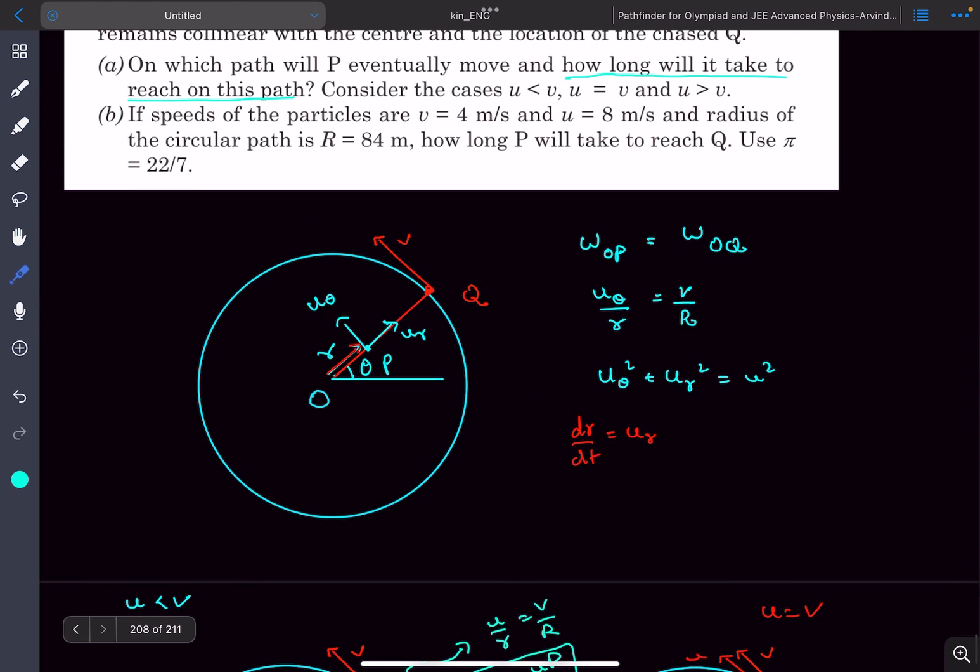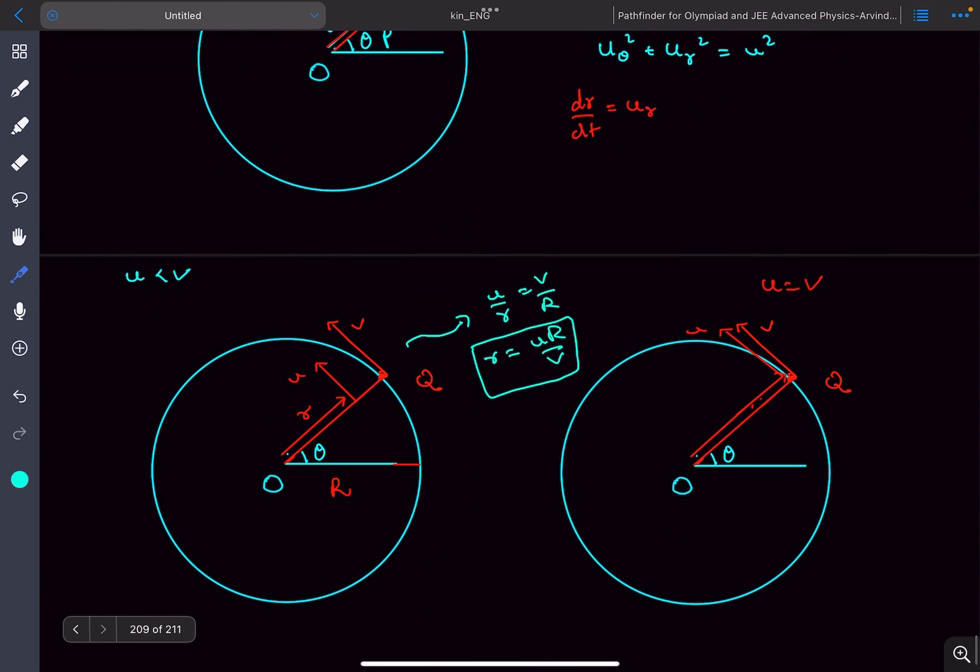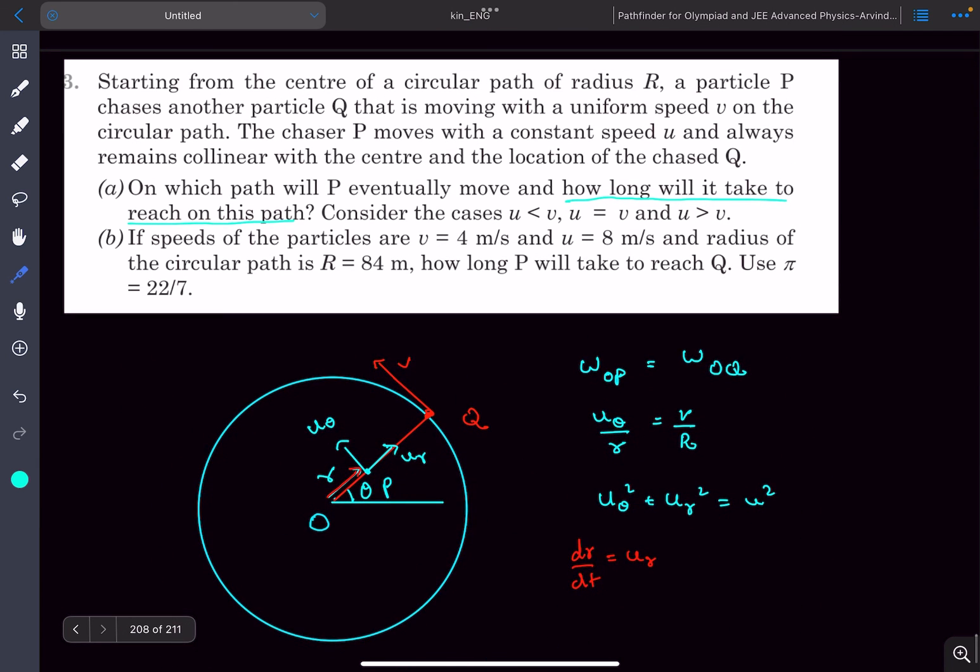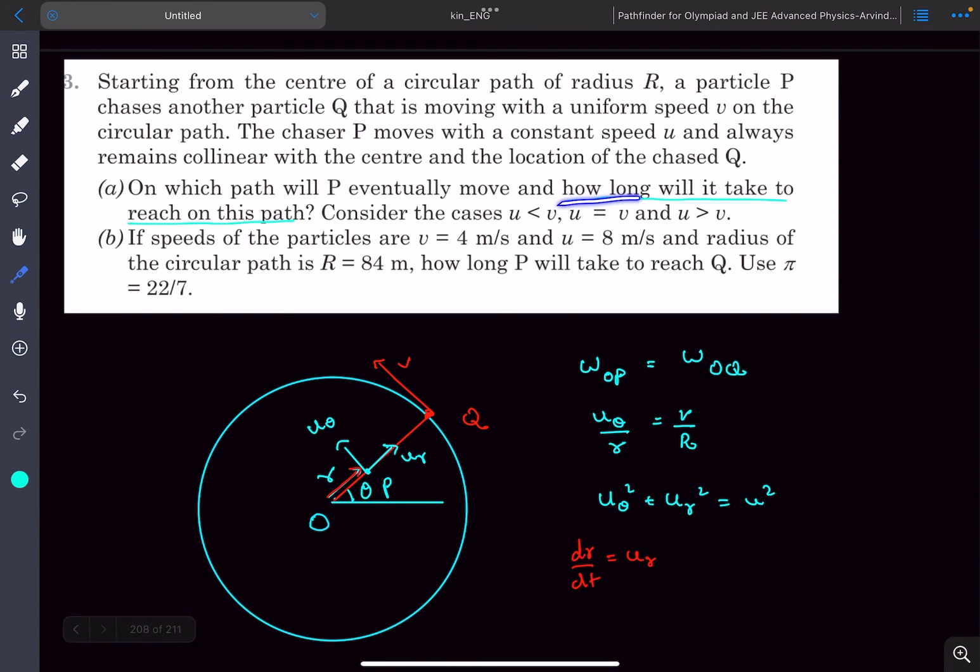In option (a), we found out what will be the final path of point P, right? So if u is less than v, it will be along this circle. If u is greater than v, the final path will be something like this. And if u is equal to v, both their radii would be same.